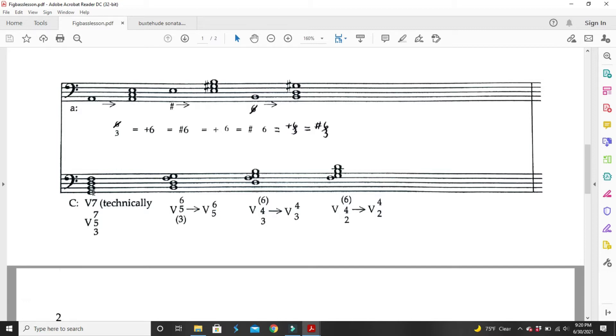in this instance, in the key of C, the V7 is G, B, D, and F. That's a major minor seventh chord. Whenever we see a major minor seventh chord in common practice, it is always a V7. It is always a dominant seven. That's why it's called a dominant seven.